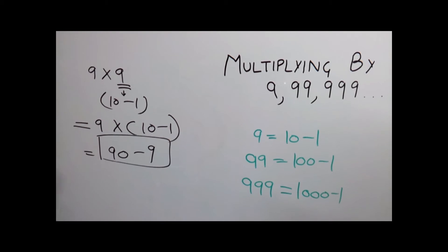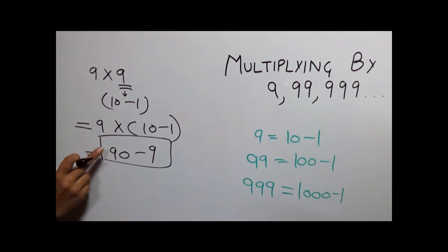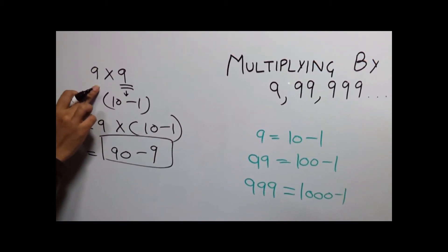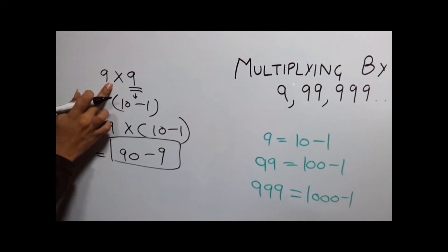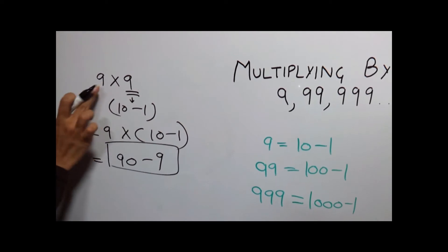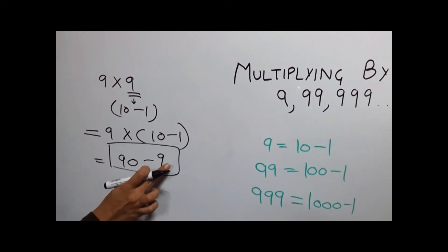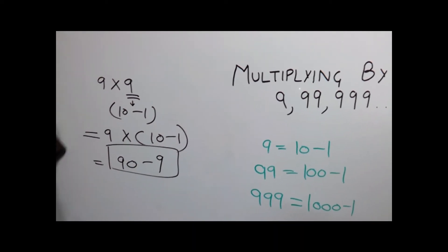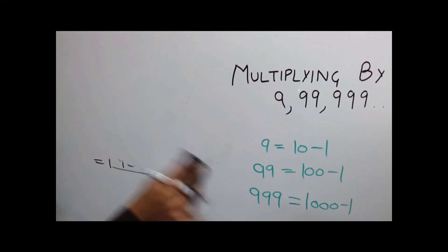This becomes the actual concept of this trick which is multiply the number by 10, 100, 1000 and so on depending on the base value of this number and then subtract the original number from the result. Let's understand this with example.